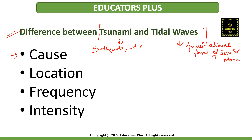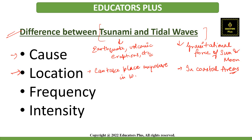In terms of causes: tidal waves are caused due to the gravitational force of the sun and the moon, whereas tsunamis are caused due to underlying causes like earthquakes, erupting submarine volcanoes, or any gas bubble erupting in the ocean or sea. In terms of location: tidal waves are mostly noticed in coastal areas, whereas tsunamis can take place in any large body of water if underlying causes are present — not necessarily coastal areas.